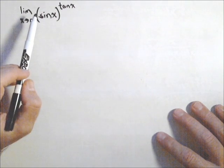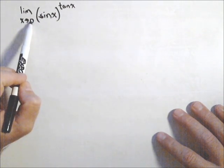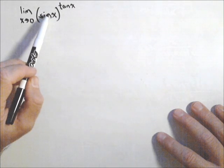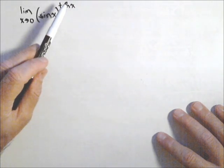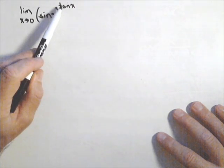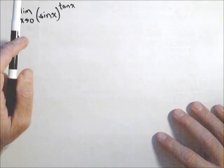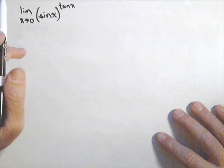Now, let's take a look at this first one here. If I were to just plug zero in, I get sine of zero to the zero, which is a zero to the zero case, which is an indeterminate form. Let's see why that is.